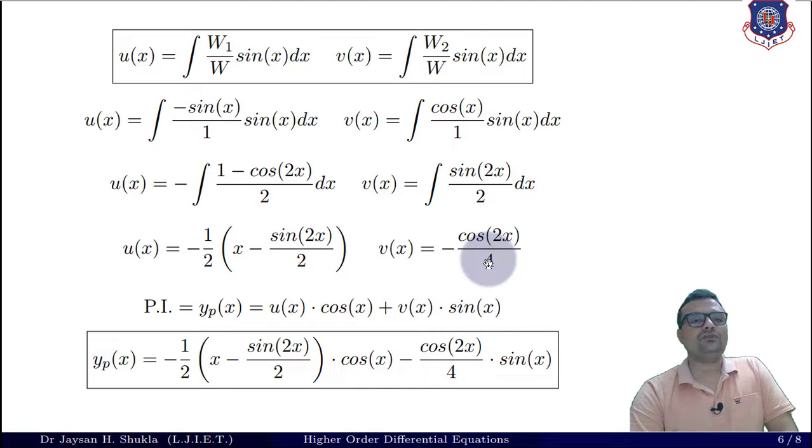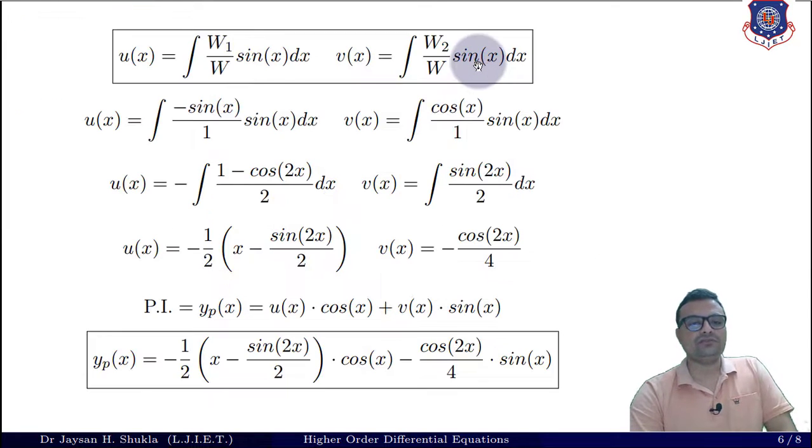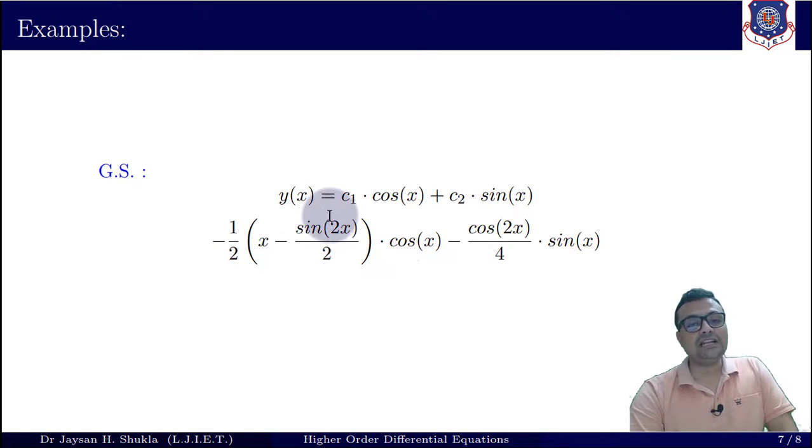So we have the final answer of u and v. Taking these values of u and v into our first step of yₜ will give me the final answer. Yₚ = -1/2(x - sin(2x)/2)·cos(x) - cos(2x)/4·sin(x). This is nothing but your value of particular integral using method of variation of parameters. Combining it with yc will give me the final solution. This is how you can find the general solution of second order differential equations using method of variation of parameters.